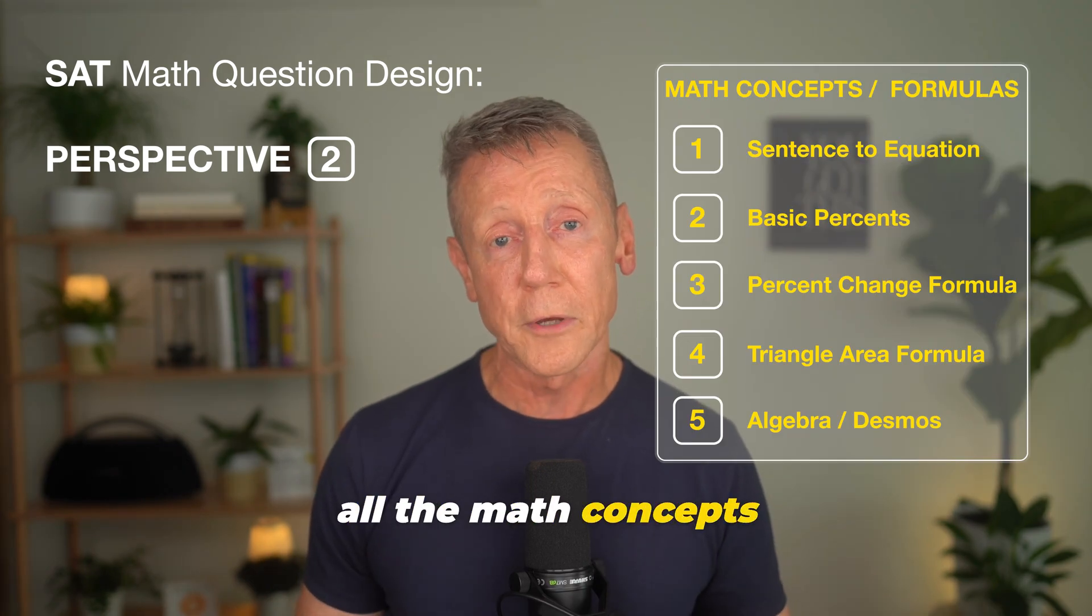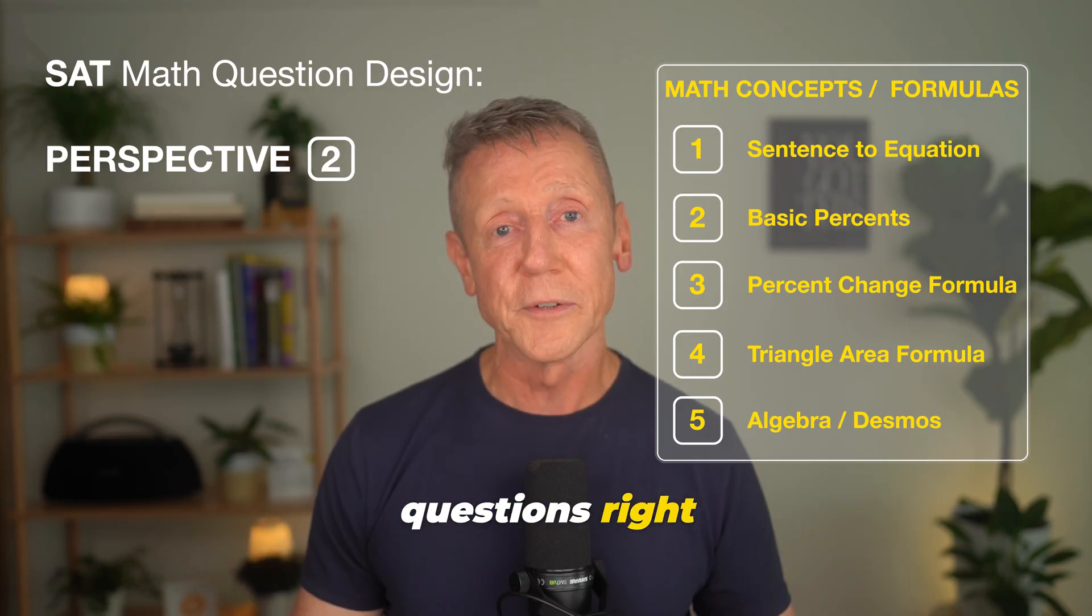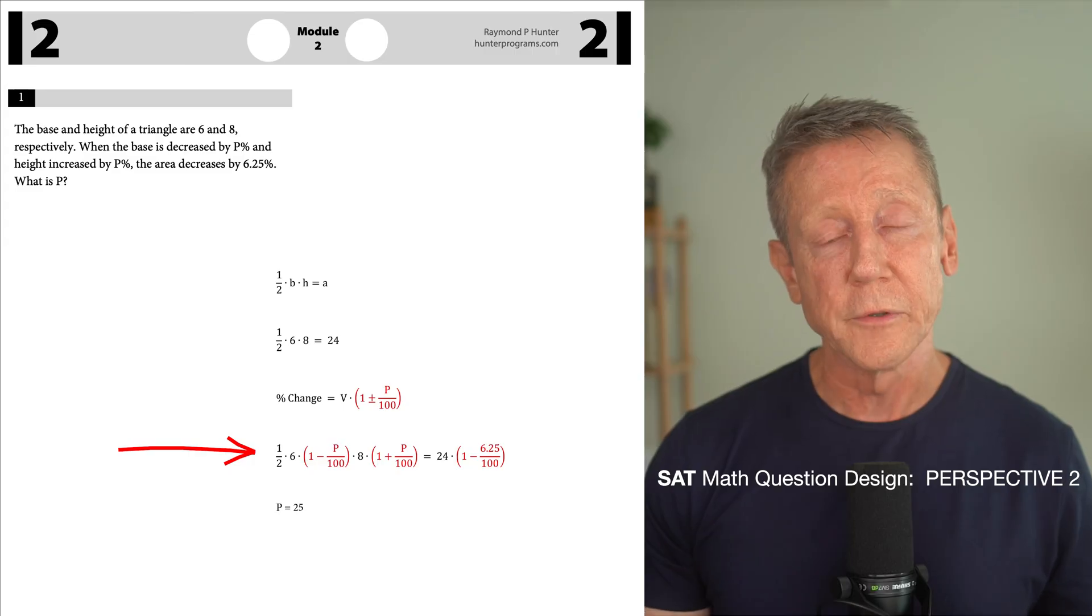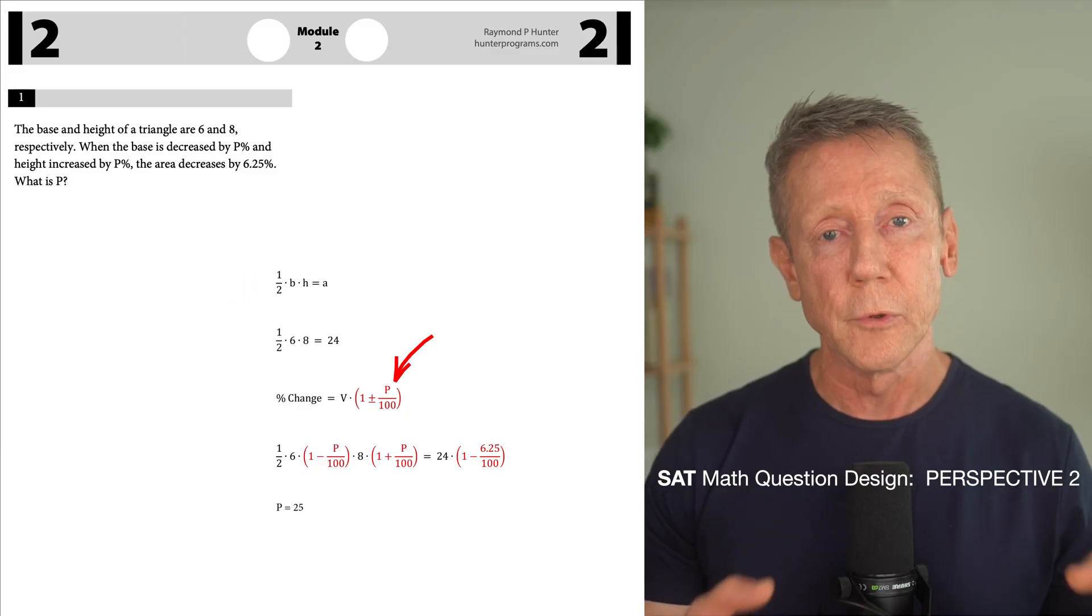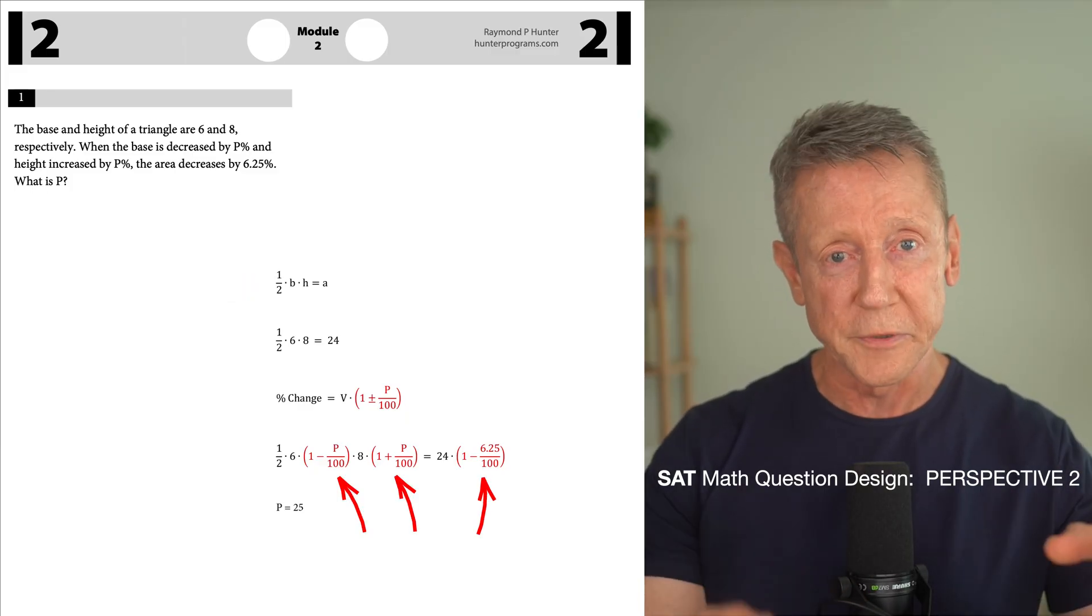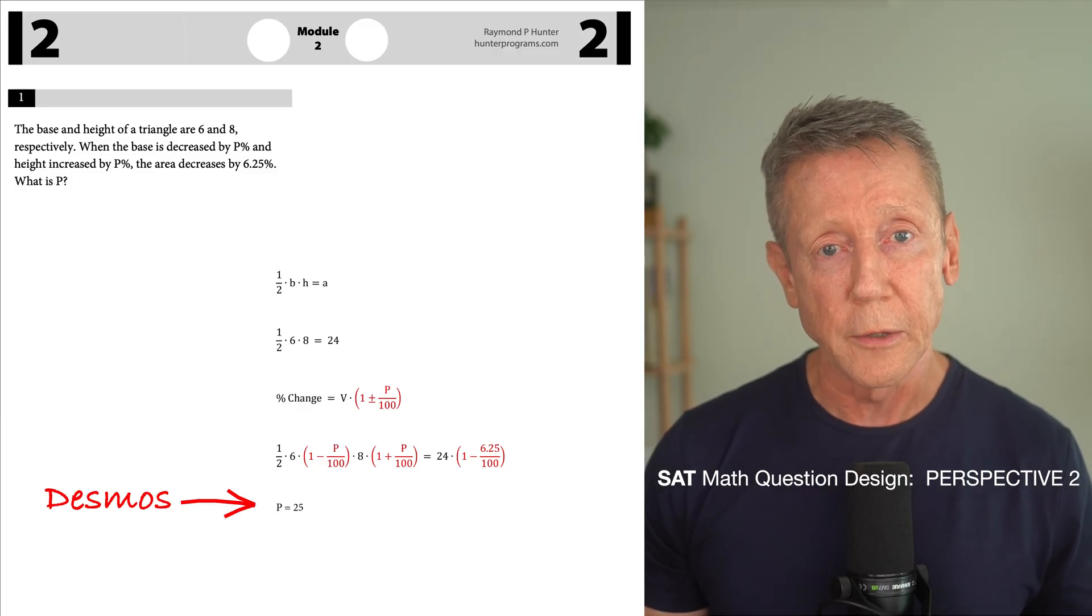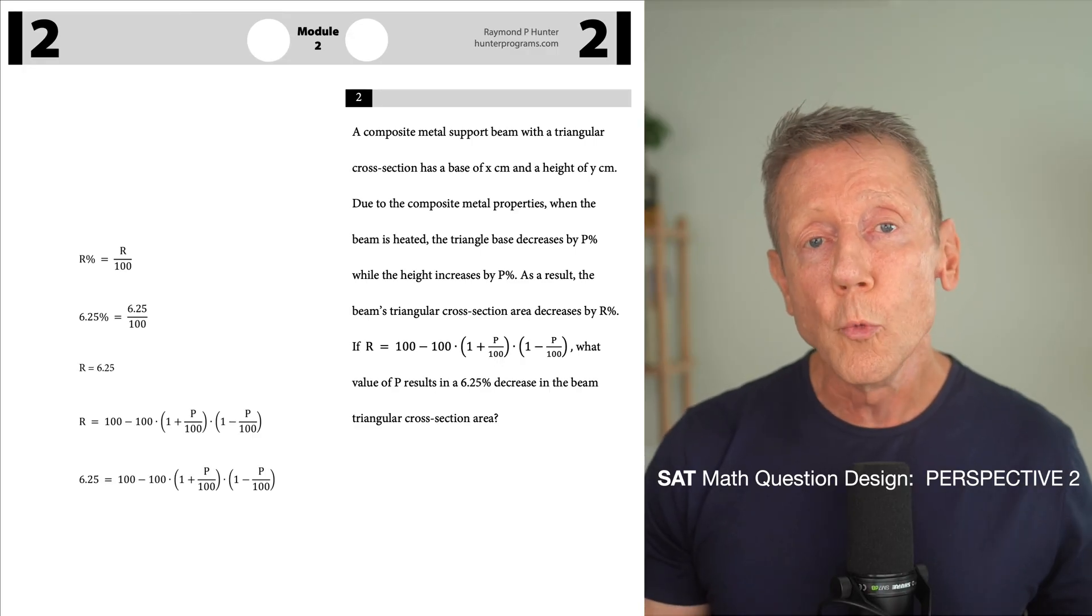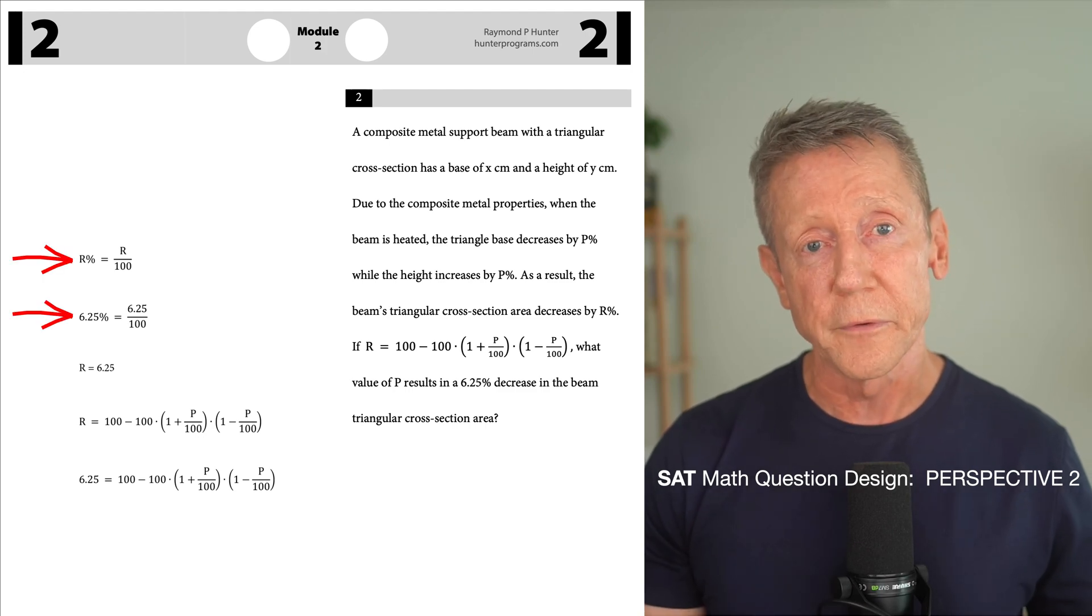Here's a list of all the math concepts and formulas we used to do the last two questions. If you know them all, you can get the questions right, even though they're hard. With the first question, we built an algebraic equation from the given information. And we started by using the formula for the area of a triangle. Then, we used basic percent knowledge to change P percent into a number, and we inserted the percent change formula into our algebraic equation. And finally, we used Desmos to evaluate our equation. But in question two, even though all five concepts are baked into the question, we only needed to use two of them to get our answer. We used basic percents to change our percent into a number, and then we used Desmos to evaluate the equation.